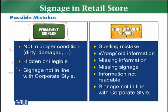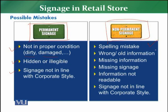Then, signage is not in the corporate style. Every retailer has corporate guidelines, and as a retailer you have to ensure that the signage you have put up follows those corporate guidelines accordingly. For non-permanent signage, the biggest mistake observed is a spelling mistake. You should make sure there is no spelling mistake, no wrong information, no old information, no missing signage, and no signage that is not properly readable. Also, signage should be in line with the corporate style of your retail organization.